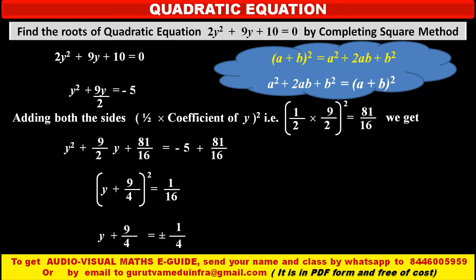Taking square root on both sides, we get y + 9/4 = ±1/4, because taking a square root gives both positive and negative values. Shifting +9/4 from the left to the right side, it becomes minus, so y = ±1/4 - 9/4, which we write as y = (±1 - 9) / 4 since both fractions share the same denominator.